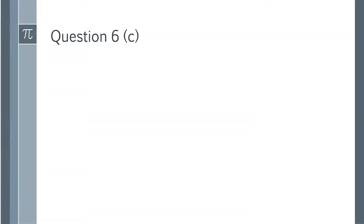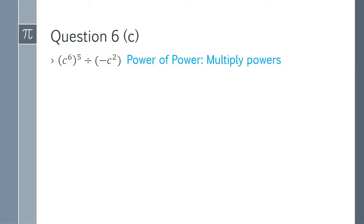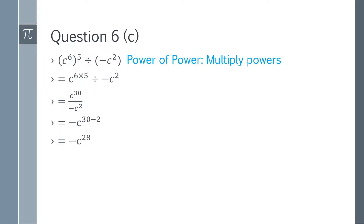Question 6c: (c⁶)⁵ divided by (−c²). We expand the parenthesis and apply the power of power rule, multiplying the powers. It becomes c to the power 6 multiplied by 5, giving c³⁰. Writing it in fraction form and shifting the second term to the denominator, the negative sign remains as −1. We subtract the powers: c³⁰ ÷ c² gives minus c²⁸. That is the answer for question 6c.